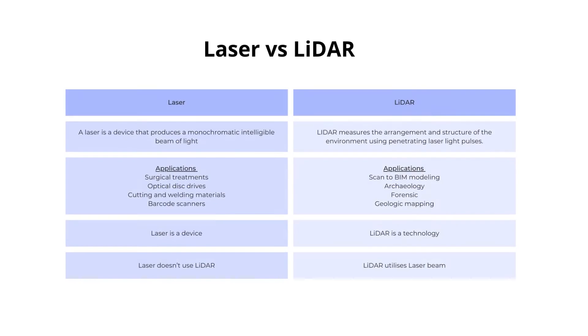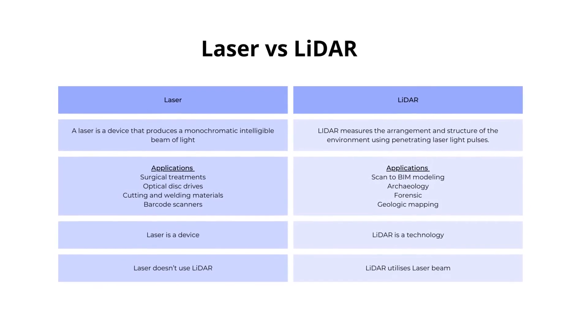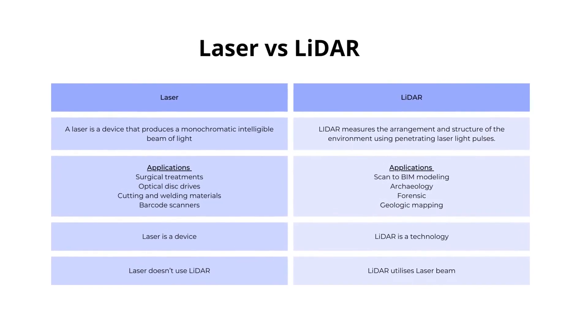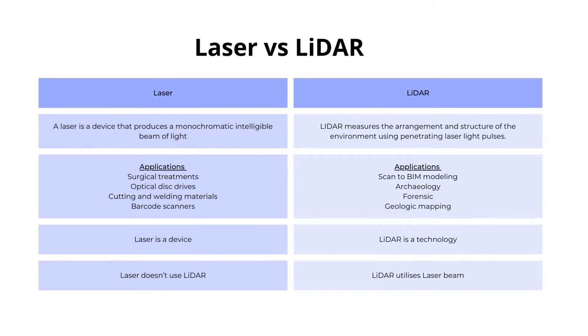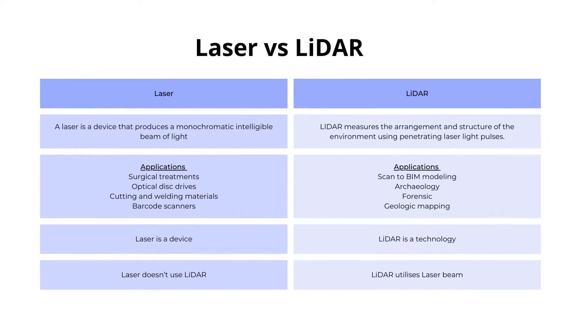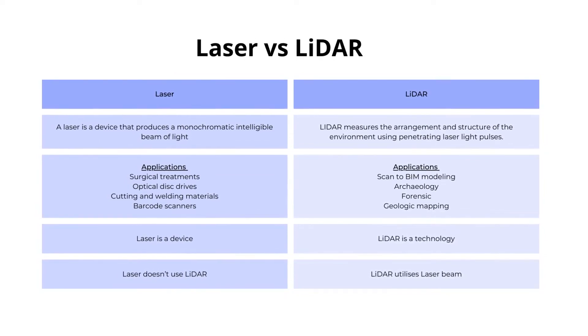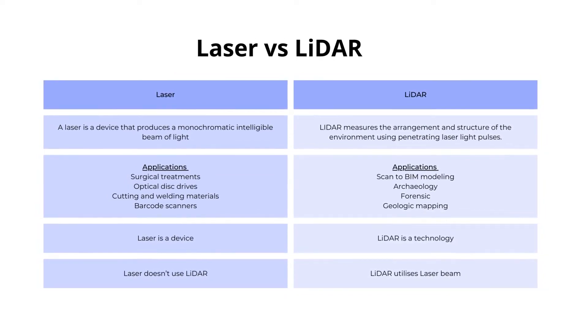Laser versus LiDAR: A laser is a device that produces a monochromatic, intelligible beam of light. LiDAR measures the arrangement and structure of the environment using penetrating laser light pulses.